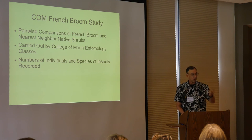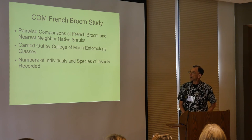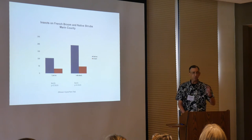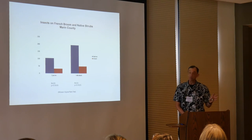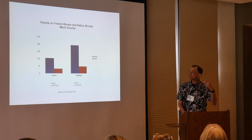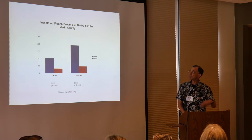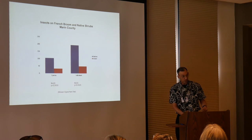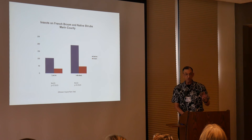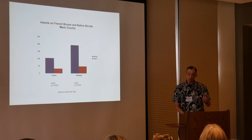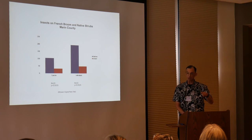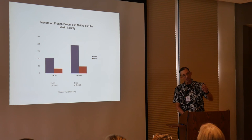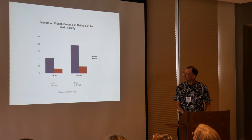We had this comparison of French broom plants and the nearest neighboring native shrubs, carried out by the College of Marin entomology classes over a number of years. We recorded the number of species and number of individuals. The simple summary: certainly a lot more species and a lot more individuals on the native plants than on the broom. The full picture is a lot more interesting, and the paper is supposed to be out next month — so if you want more detail, just let me know and I'll send you a copy.